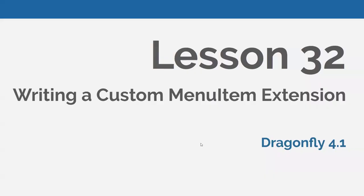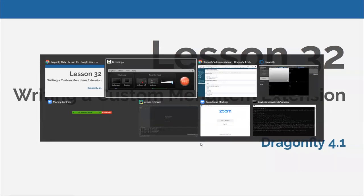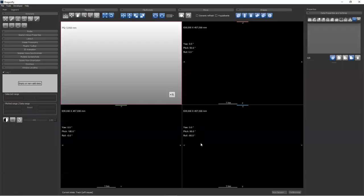We are going to dive into writing a custom menu item extension. I'm using Dragonfly 4.1, customized slightly as described in lesson six. I'm also launching Dragonfly from PyCharm, so I'll be launching it that way at least for the second time I launch it today. There are no notes on today's lesson — we're just going to dive right in and start writing the custom menu item extension.